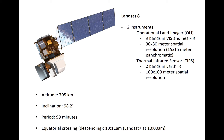Landsat 8 consists of two instruments: the Operational Land Imager, or OLI, which is responsible for passive detection of visible and near-IR reflectance, and the Thermal Infrared System sensor, or TERS, which detects IR bands in the atmospheric window.